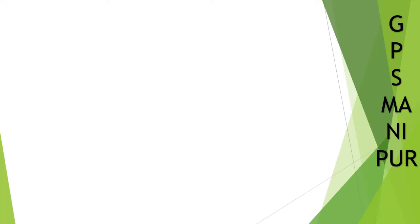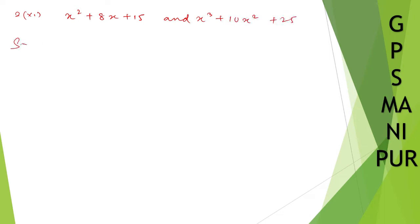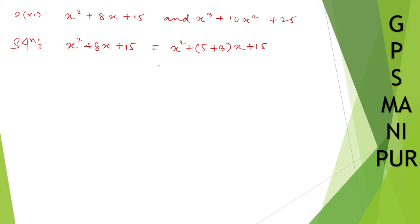We are doing exercise 2.4, question number 2, roman number 11. We have x squared plus 8x plus 15, and x cubed plus 10x squared plus 25x. For the first polynomial, x squared plus 8x plus 15: 15 can be written as 5 times 3, and 5 plus 3 equals 8. So I am splitting the middle term as 5x plus 3x.